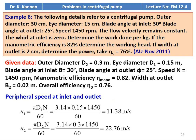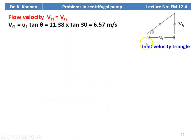We calculate the peripheral speed at the inlet and the outlet. U1 equal to pi D1 N divided by 60, substituting: 3.14 into 0.15 into 1450 divided by 60 equal to 11.38 meters per second. U2 equal to pi D2 N divided by 60: 3.14 into 0.3 into 1450 divided by 60 equal to 22.76 meters per second. From the inlet velocity triangle, flow velocity VF1 equal to U1 tan theta, which is 11.38 into tan 30 equal to 6.57 meters per second.